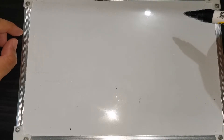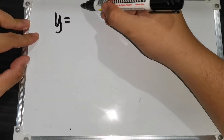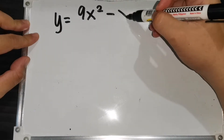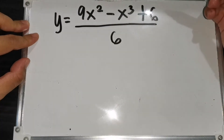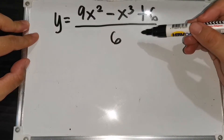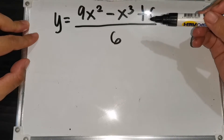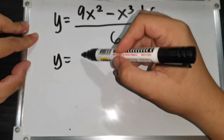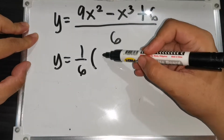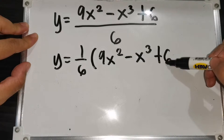The first thing to do is to copy the given equation of the curve. So y = (9x² - x³ + 6) / 6. Before taking the first derivative, notice there is a 6 in the denominator. We can factor it out, so y = (1/6)(9x² - x³ + 6).